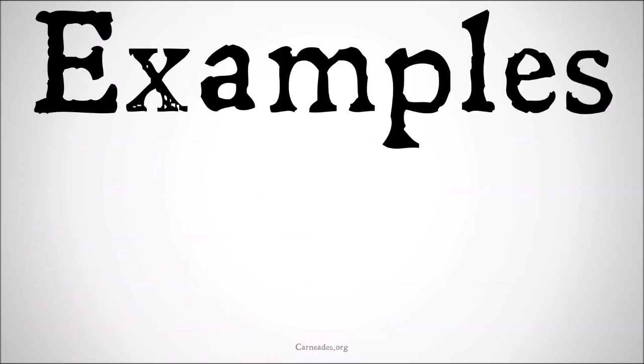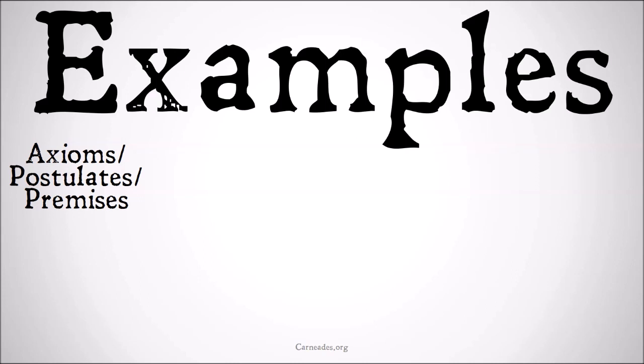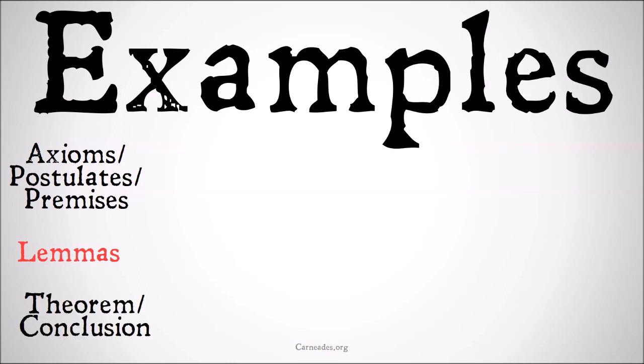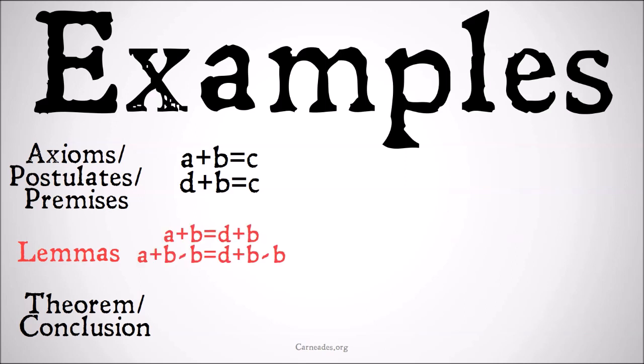To understand this, we'll take some oversimplified examples that show us some axioms, postulates, assumptions — things we might assume at the beginning of an argument — the lemmas we use to get from our assumptions to our conclusions, and the theorem or final conclusion we have. One example might be: we have a + b = c, and d + b = c. Thinking in mathematics and arithmetic, not logic right now.